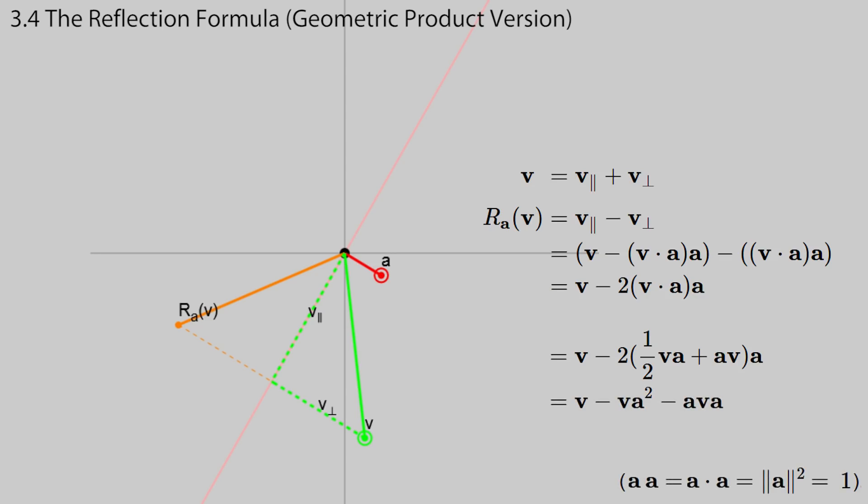For this step, the geometric product of a with itself is just a dot product, since the exterior product is 0. This is saying the exact same thing, but in a different notation. Using a simple product notation, instead of a formula, to encode a fundamental operation such as a reflection, is going to prove very useful.